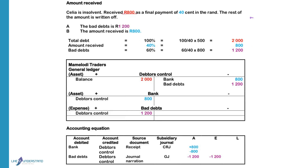Received 800 Rand as a final payment of 40 cents in the Rand. In this case the amount received is given. The total debt is 100%, the amount received is 40% and the bad debts is 60%. So the 40% that is received equals 800 Rand. If we want to calculate the bad debts, the percentage that we want is 60 divided by the percentage that we know, 40, times 800, and that will give us 1,200. The debtors owe a total of 2,000 and we will credit the debtors control with both amounts: 800 for the amount received and 1,200 for bad debts.